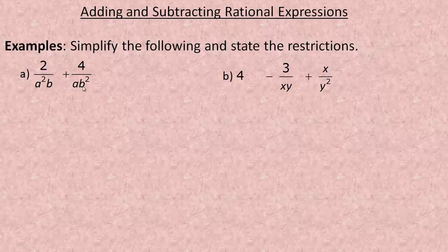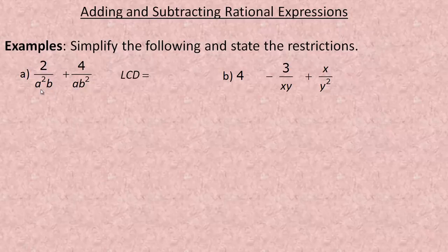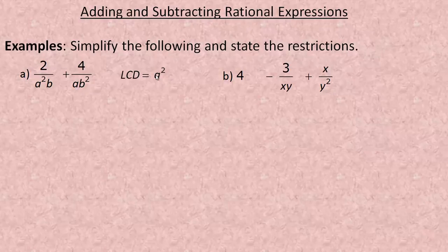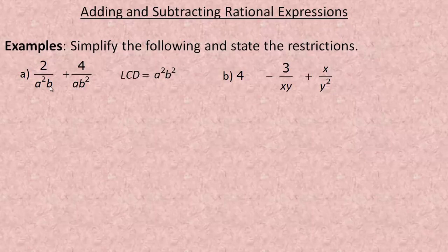Whatever is in the denominator, you have to have all of that in the common denominator — the LCD, or least common denominator. There's an a squared in one denominator and an a in the other, so you need the larger: a squared. There's a b here and a b squared here, so we need b squared, because b alone isn't enough since there are already two b's multiplied.